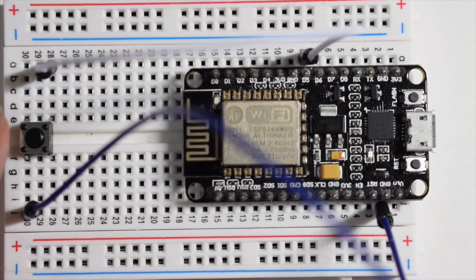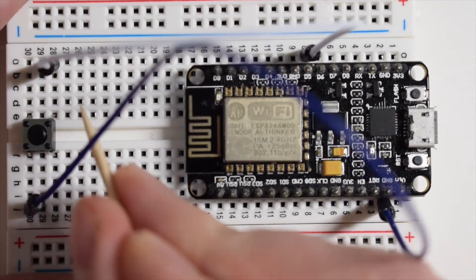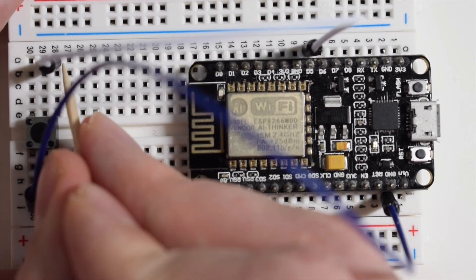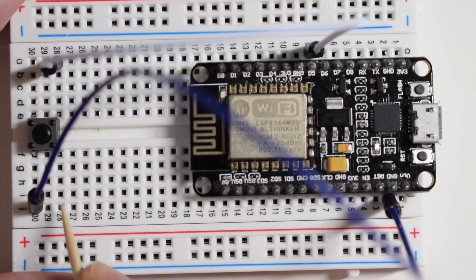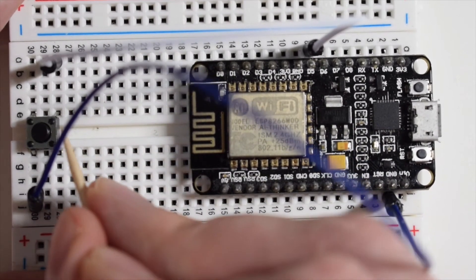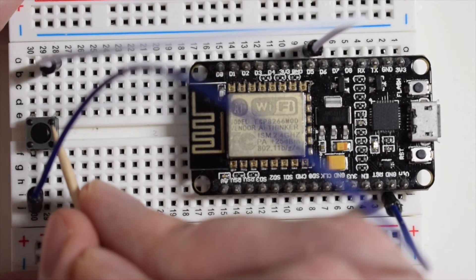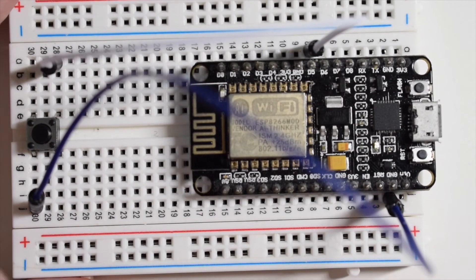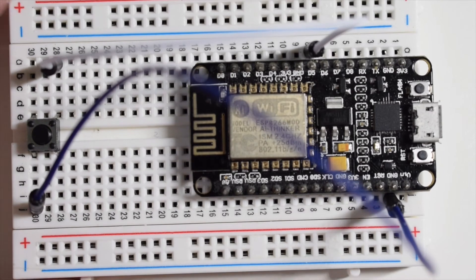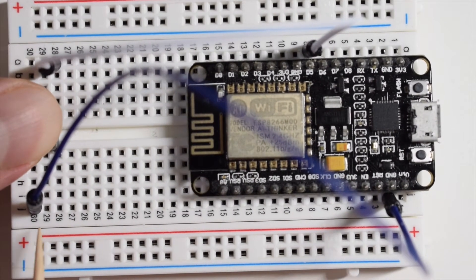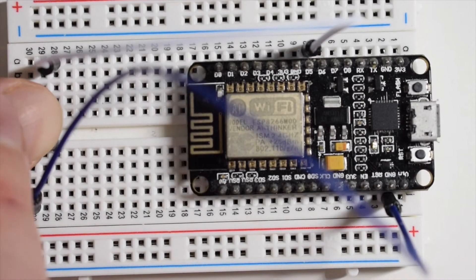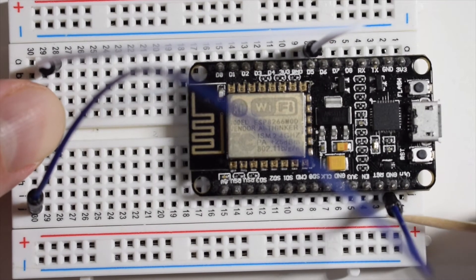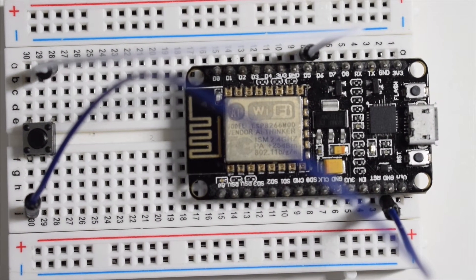And now, quick explanation how this works. When the button is released, we don't have a connection between those four pins in the row 28 and those four pins. They're connected by the button. When the button is released, we don't have connection between row 28 and 30. When I press the button and hold it, then we get the connection. So, when the button is pressed, we have the electricity flowing from D5 to the ground.